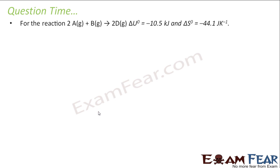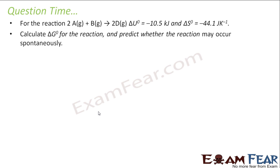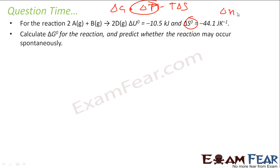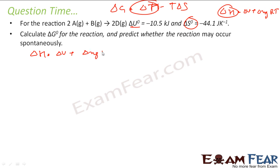For the reaction given, find the delta G — the Gibbs free energy change — and predict whether the reaction is spontaneous or not. Delta G is nothing but delta H minus T delta S. Delta S is given, but delta H is not given, so first we have to find delta H. Delta H is nothing but delta U plus delta Ng into RT.